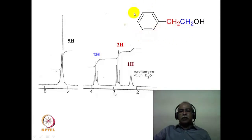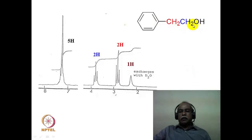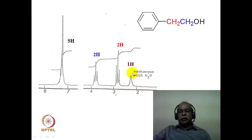This is a monosubstituted benzene derivative with a benzylic CH2 and an oxygen-attached CH2. The aromatic protons appear between 7–7.5 ppm as 5-hydrogen intensity. The benzylic CH2 (red) comes around 2.8–2.9 ppm and the oxygen-attached CH2 comes above 3 ppm — two separate triplets are observed, each split by two adjacent hydrogens. The OH hydrogen is D2O-exchangeable and appears as a broad signal around 2.2 ppm, which vanishes upon adding D2O.